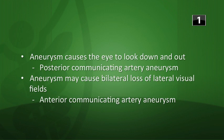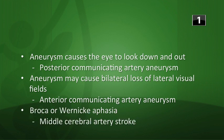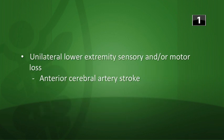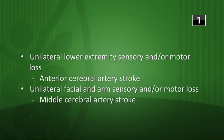Broca or Wernicke aphasia — this is the middle cerebral artery stroke. Unilateral lower extremity sensory and/or motor loss — this is the anterior cerebral artery stroke. Unilateral facial and arm sensory and/or motor loss — this is again the middle cerebral artery stroke.